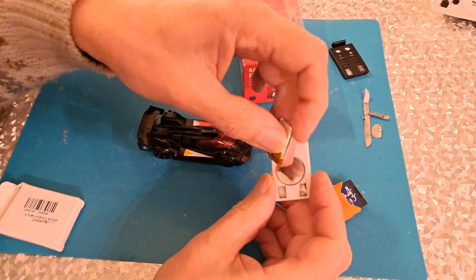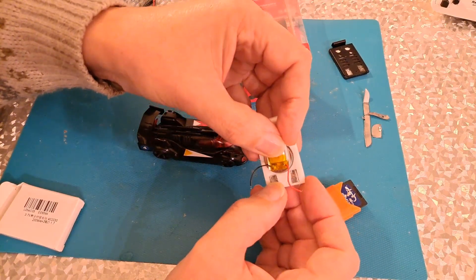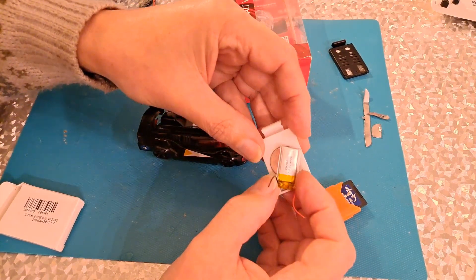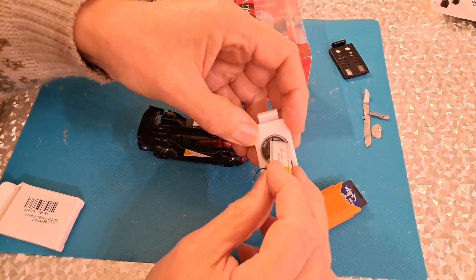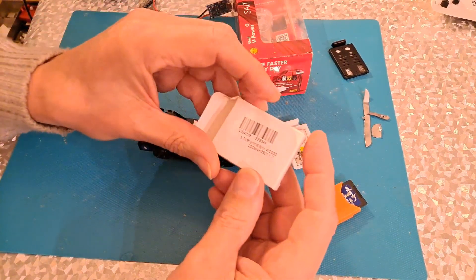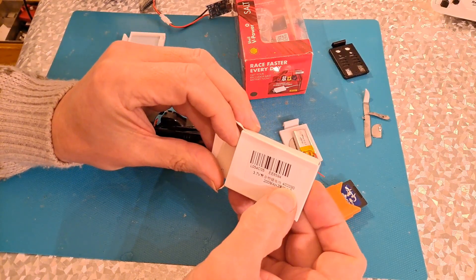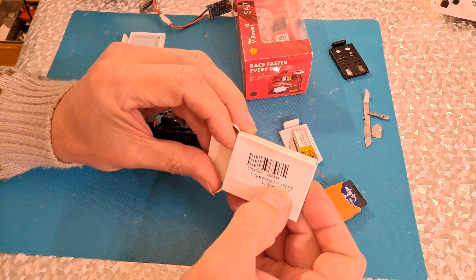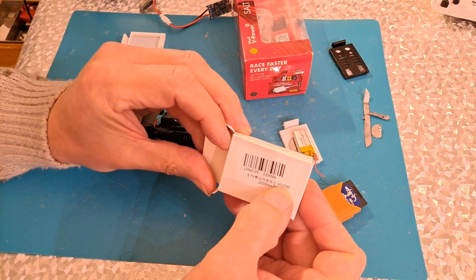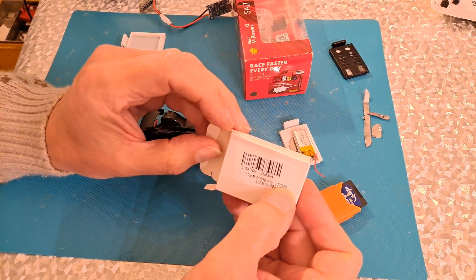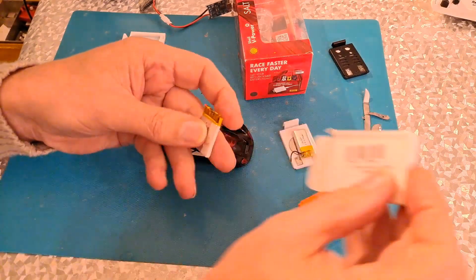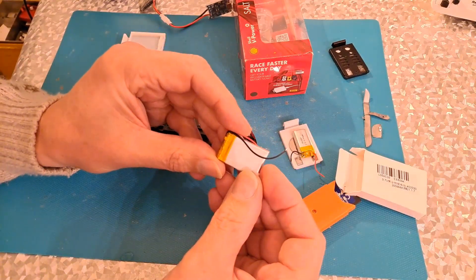I could probably get that in there and solder it direct to the tags. Obviously I'd have to cut a hole in it. Then I remembered I did order some LiPo batteries a while back. 40-20-30 so that's four millimeters thick, 20 millimeters width and 30 millimeters long. These ones.